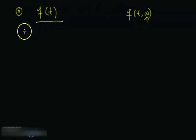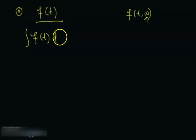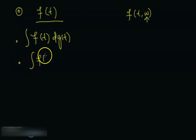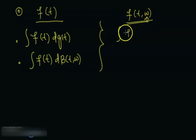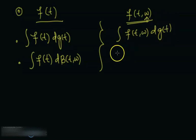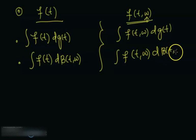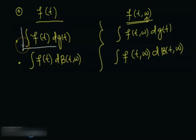A deterministic function can be integrated with respect to some deterministic function. At the same time, a deterministic function can be asked to be integrated with respect to some random quantity — let's say Brownian motion. On the same lines, we can be asked to integrate a random function with respect to some deterministic function, or just dt, or with respect to some random quantity like Brownian motion.